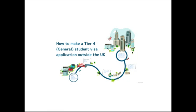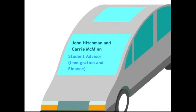Hello everyone, I hope you can all hear me. It's great to see so many of you attending today, and thank you for joining me for the webinar on how to make a Tier 4 general student visa application from outside of the UK. To introduce myself, my name is Carrie McMinn. I'm one of the student advisors for Immigration and Finance here at SOAS, University of London. We also have my colleague John Hitchman, who is also another advisor.